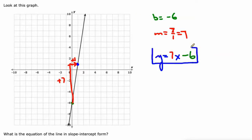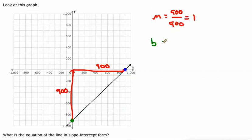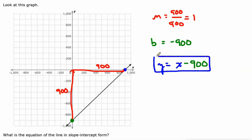Last one. Y-intercept is negative 900. And maybe we just look all the way up here and we see that this goes up to 900. So we got a rise of 900 and a run of 900. So our slope is 900 divided by 900, which is just 1. And our y-intercept was negative 900. So our equation is y equals 1 times x, but I'm not going to bother putting that 1 in there. Because 1 times x is just x minus 900. So there's our equation, y equals x minus 900.